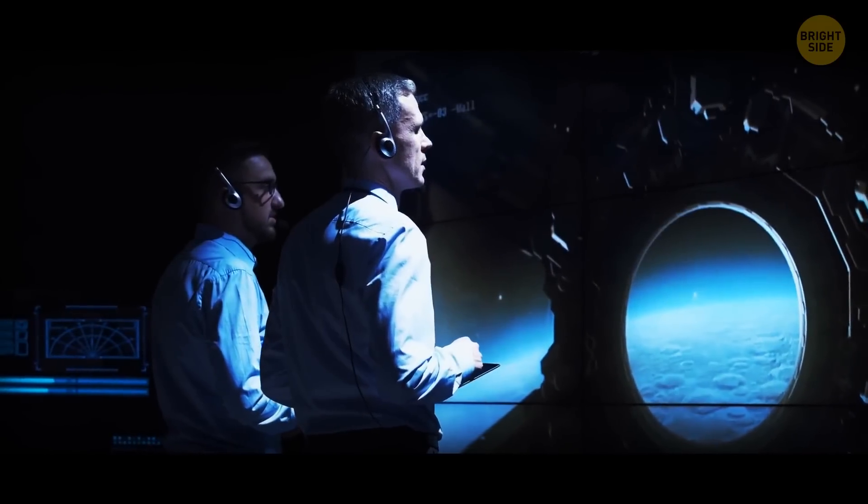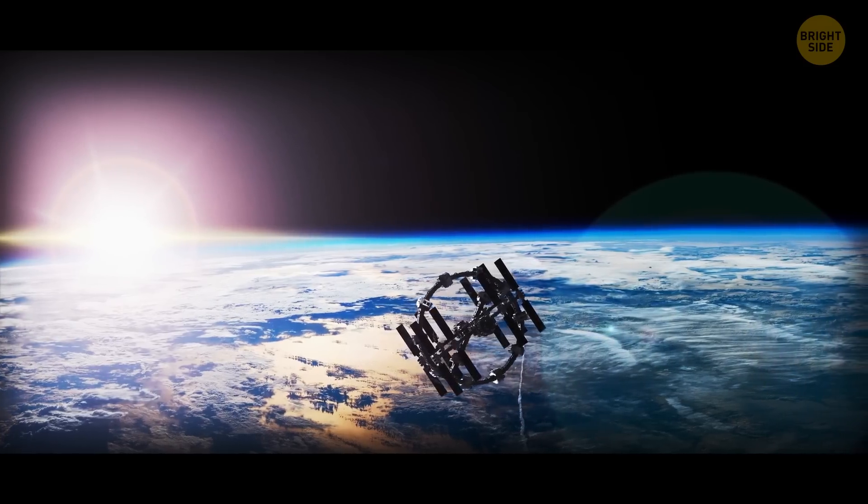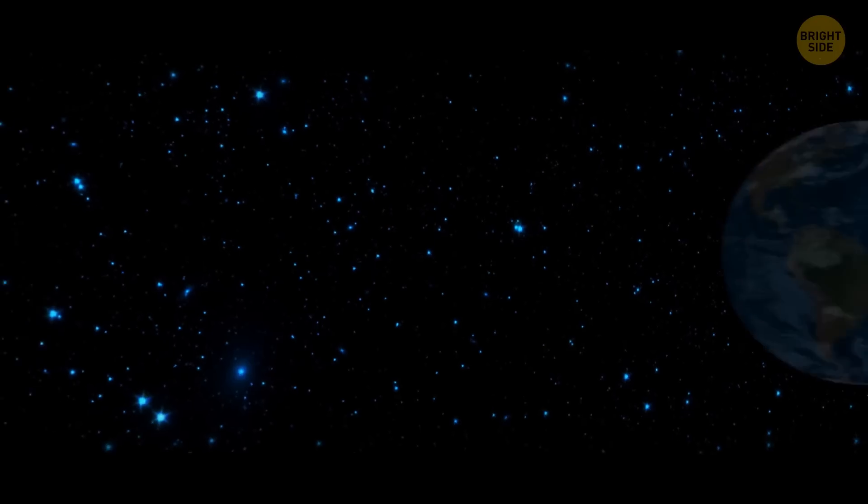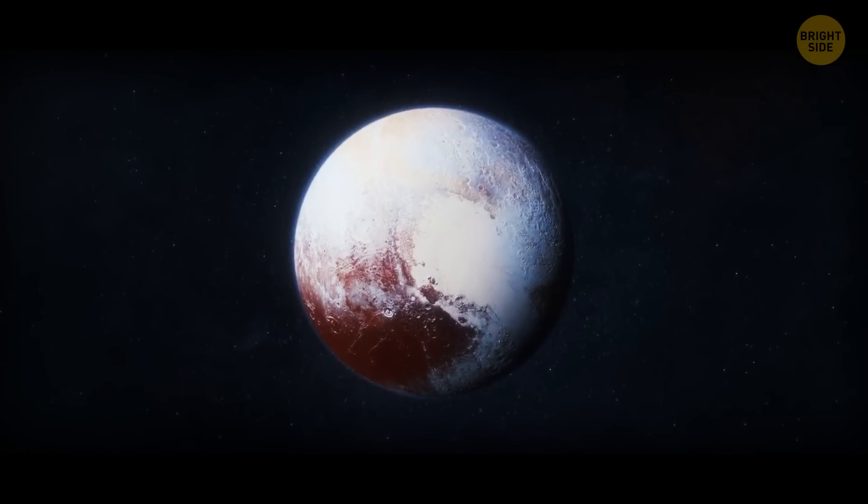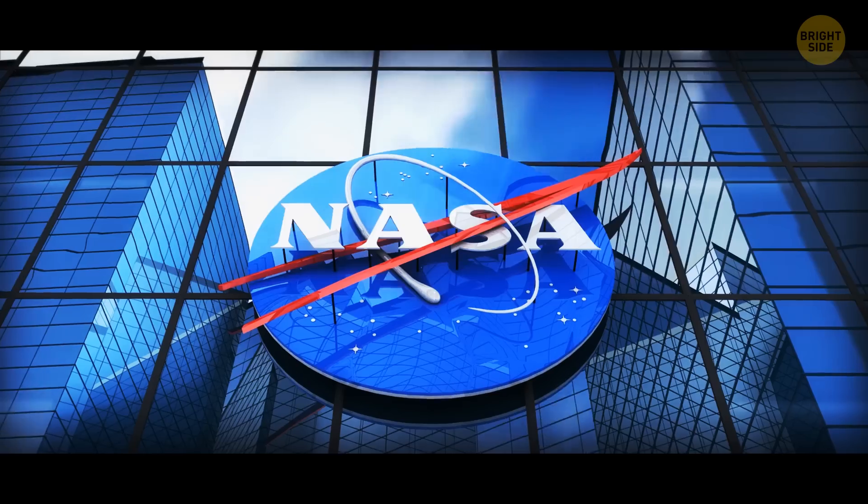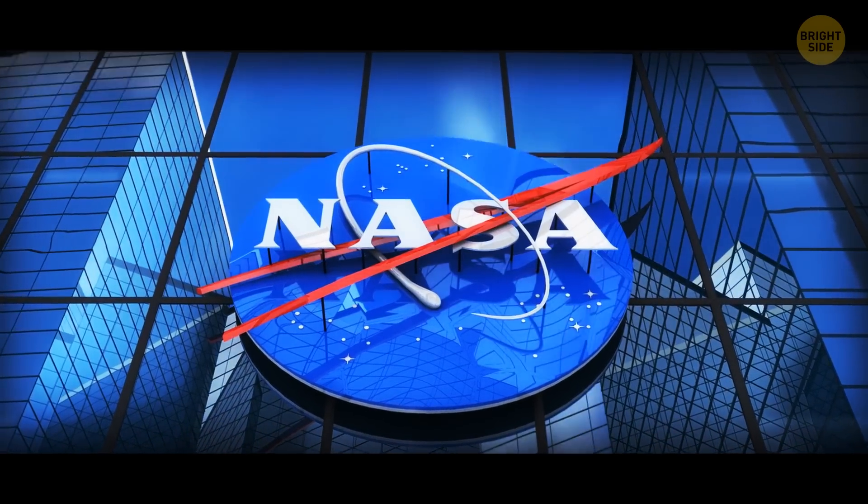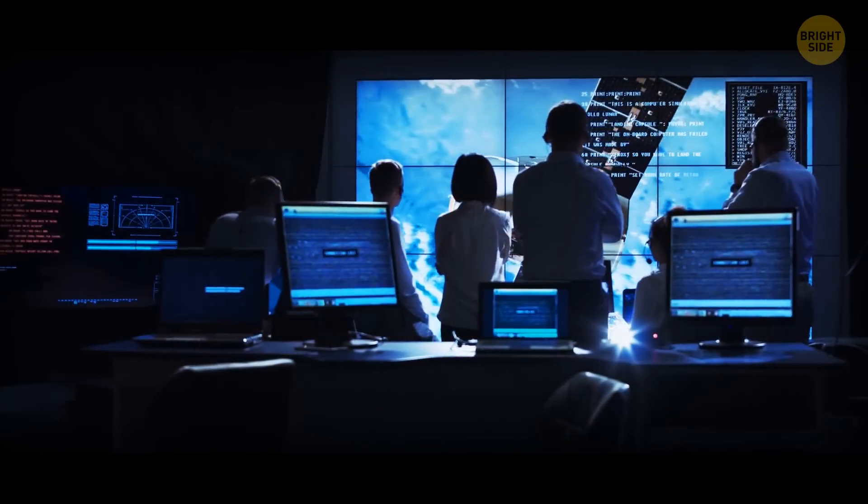Humans have been exploring space for over 60 years, and the effort has certainly paid off. All the planets in our solar system have now been explored, even the dwarf planets of Pluto and Ceres. Most of the exploration was done by NASA's Voyager program, which began in 1977.